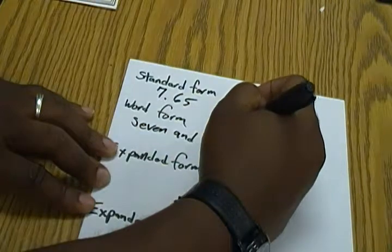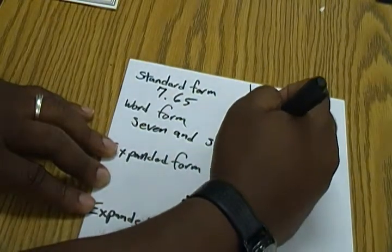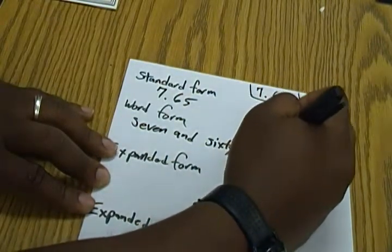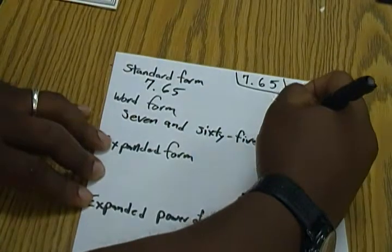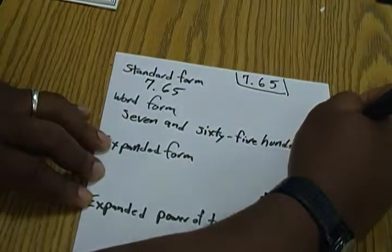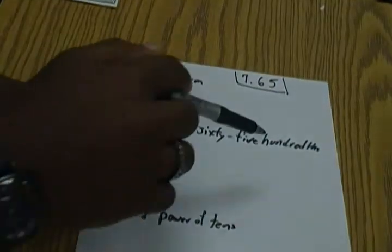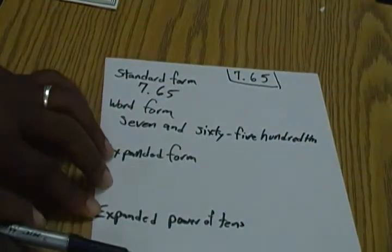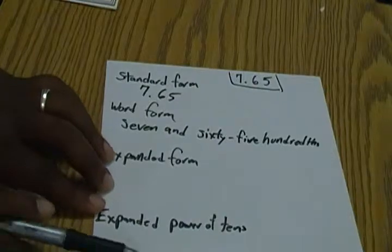So that's why we give it the name hundredths. So you write it out: seven and sixty-five hundredths. Don't forget on the end, since we're talking about hundredths, you have to put that 'ths' on the end.